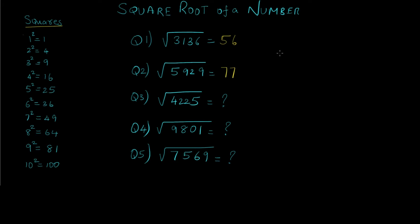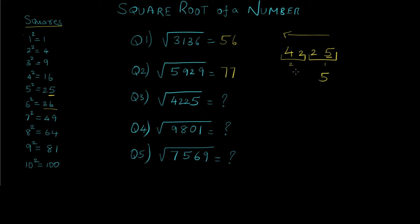Now let's solve the third question: the square root of 4225. We start making groups of 2 from right to left — this is the first and second group. For the first group we observe the units place, and 5 occurs in 5 squared only, so this is a special case. We already found the units place value is 5. For the tens place we observe 42, and the largest number equal to or less than 42 is 36, which is 6 squared. So we get 6, and our final answer is 65. The square of 65 gives 4225.